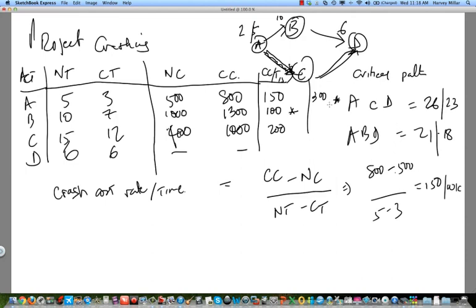But C only has three days to crash. So it will cost us $600. All right? And when we crash that by three, we go from fifteen days now to twelve days. And so now we have two and twelve, it's fourteen. Fourteen and six is twenty. So we're able to bring this down to twenty. This still remains at eighteen.